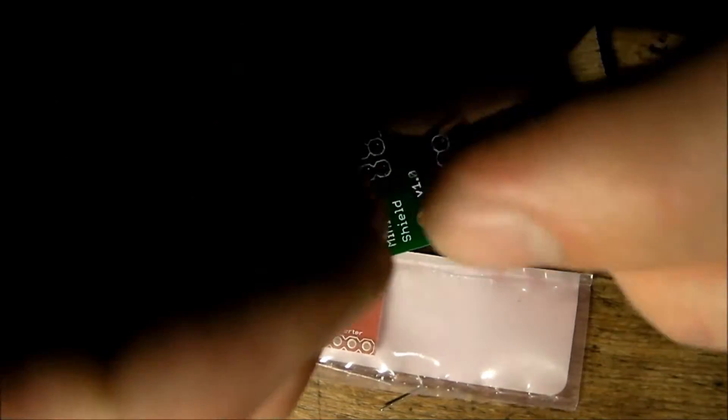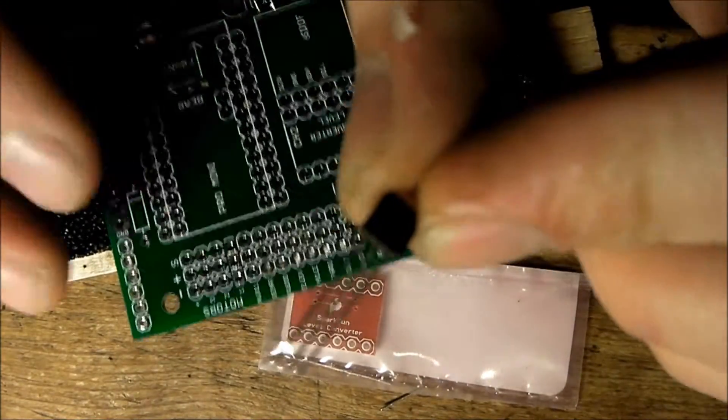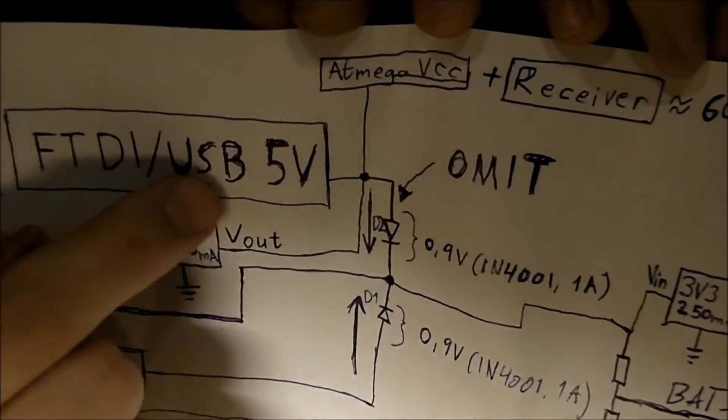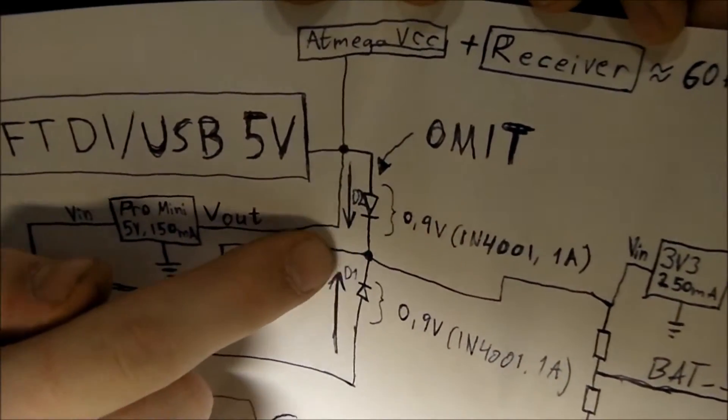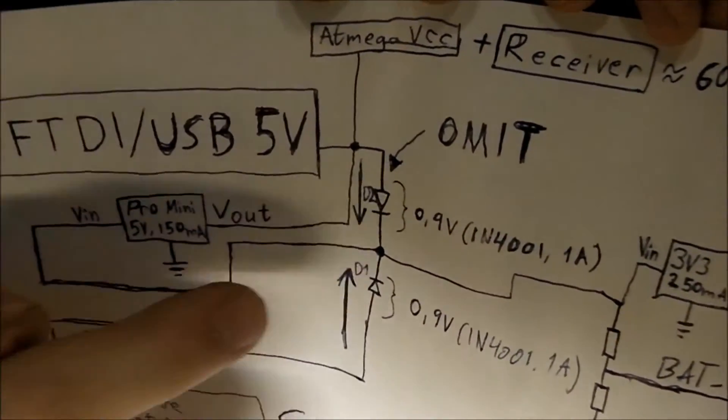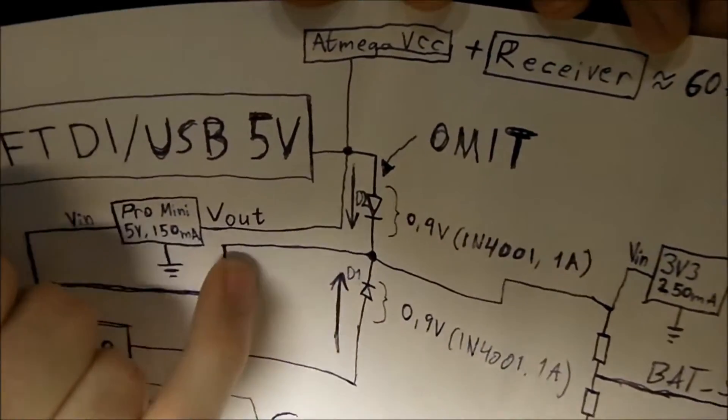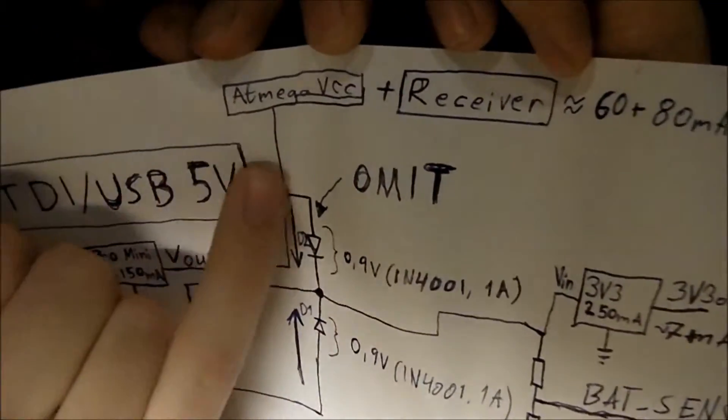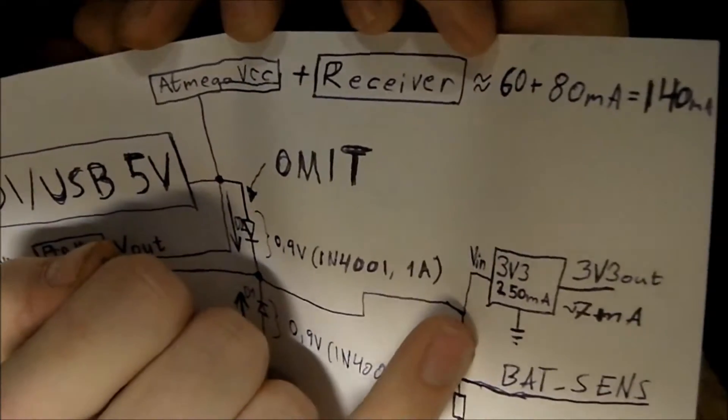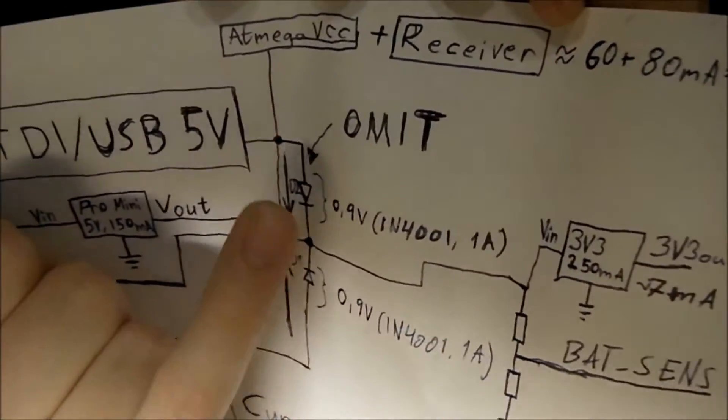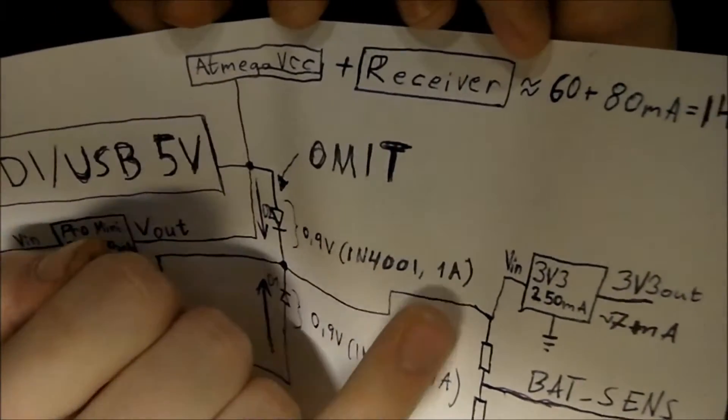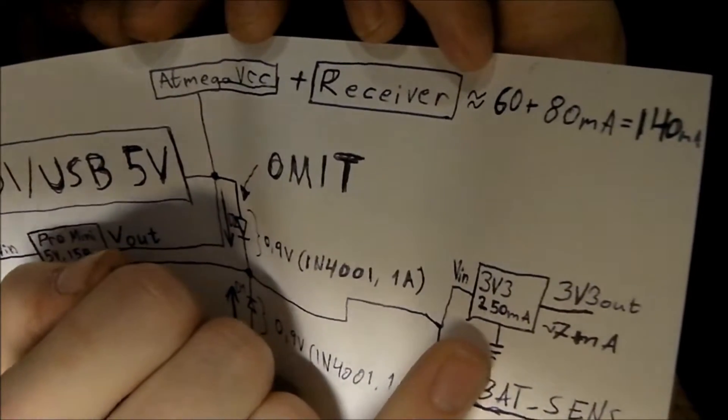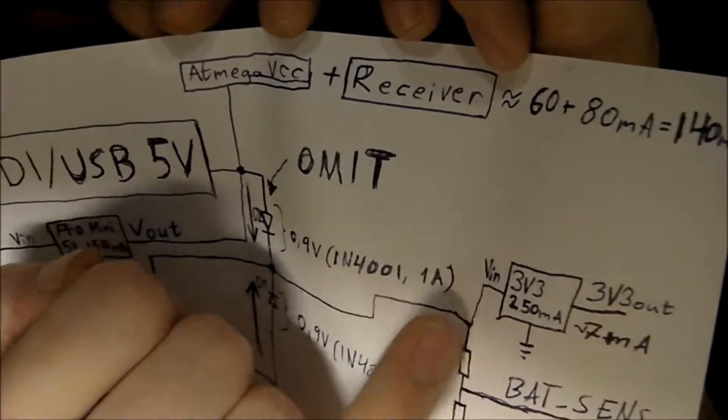We've also got the 250mA 3.3V regulator, so it will be more than enough. When you plug in the USB voltage, you will have power through this diode and it will go and power your receiver, your Atmega, and your 3.3V regulator. Because it's a low voltage dropout, so even if this diode drops 1V, this regulator here will power your sensors which is at 3.3V. So it will be totally fine.